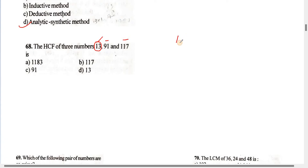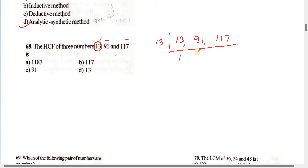Now, for 13, 91, and 117 — all three are multiples of 13. The common factor running through all three numbers is 13. So the highest common factor — HCF — of these three numbers is 13.